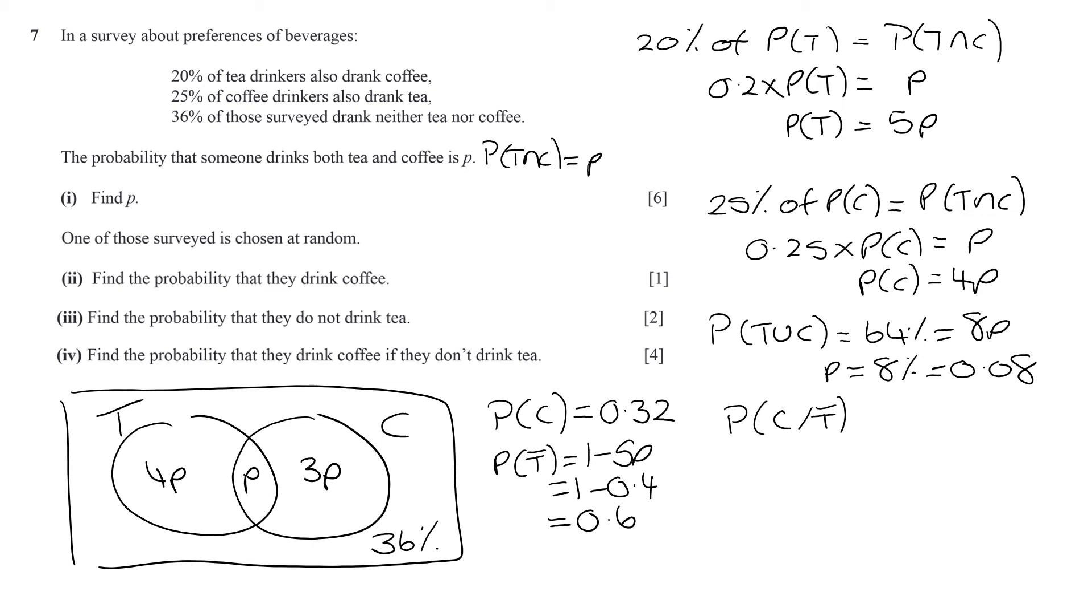Finally, find the probability that they drink coffee given that they don't drink tea. Well, that's the probability of coffee and not tea divided by the probability of not tea. Coffee and not tea is the 3p here, so that is, p is 0.08, so 3p is 0.24. Not tea is 0.6, and 0.24 divided by 0.6 is two-fifths or 0.4.